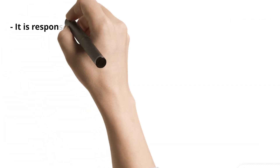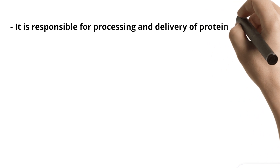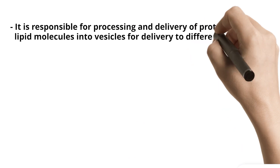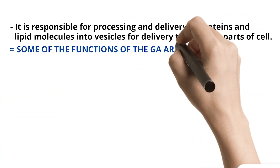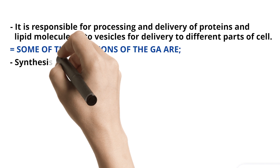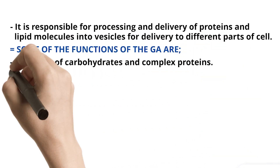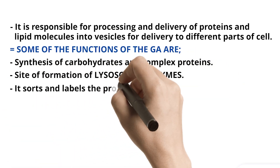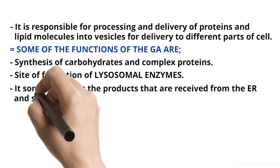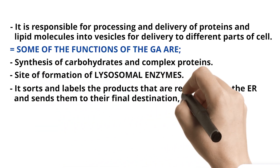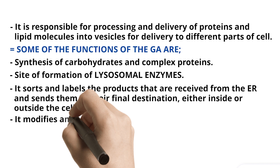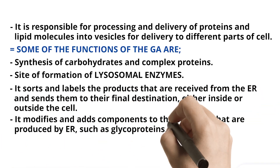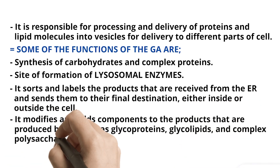It is responsible for processing and delivery of proteins and lipid molecules into vesicles for delivery to different parts of the cell. Some of the functions of the GA are: synthesis of carbohydrates and complex proteins; site of formation of lysosomal enzymes; it sorts and labels the products received from the ER and sends them to their final destination, either inside or outside the cell; it modifies and adds components to the products produced by ER, such as glycoproteins, glycolipids, and complex polysaccharides.